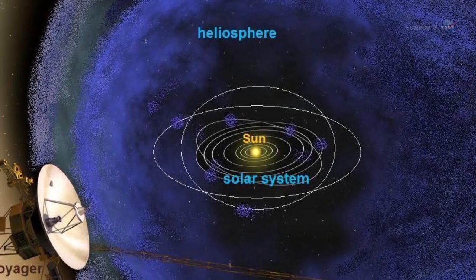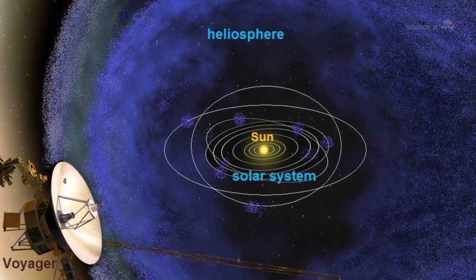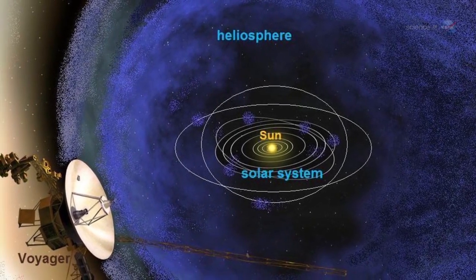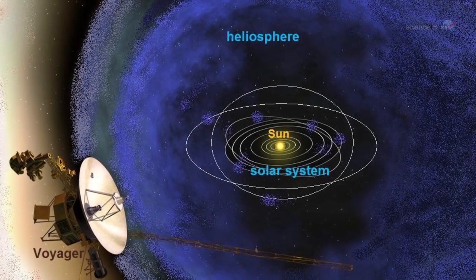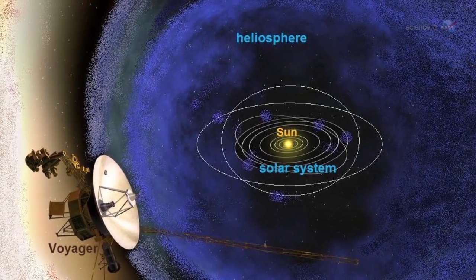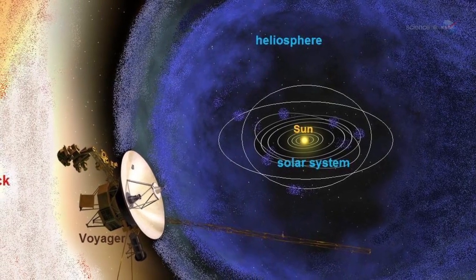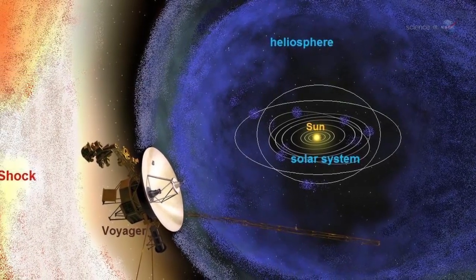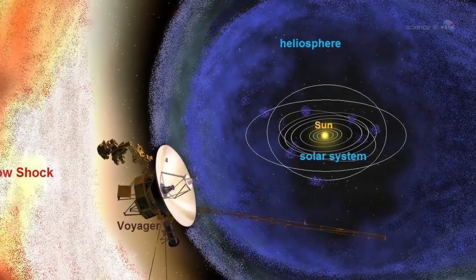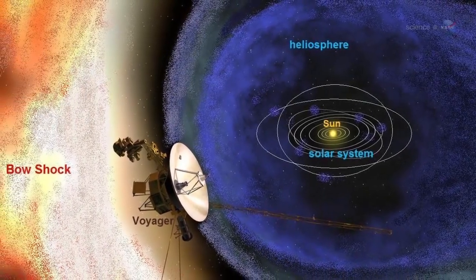A reversal of the Sun's magnetic field is, literally, a big event. The domain of the Sun's magnetic influence, also known as the heliosphere, extends billions of kilometers beyond Pluto. Changes to the field's polarity ripple all the way out to the Voyager probes, on the doorstep of interstellar space.